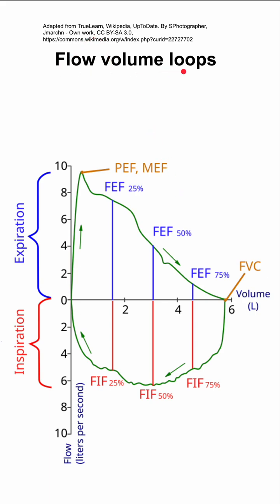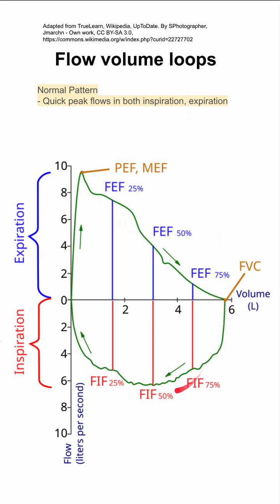Here are some notes on flow volume loops. In a normal flow volume loop, you'll have a quick peak flow in inspiration and in expiration — tracing inspiration and expiration. After expiration, you'll have a gradual return to zero flow, and you'll have no significant plateaus on either the inspiratory side or the expiratory side.